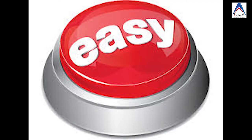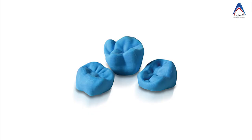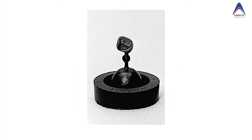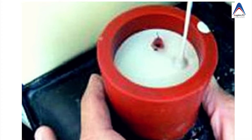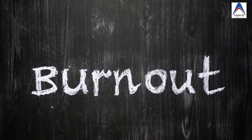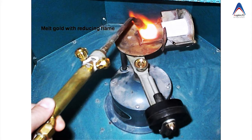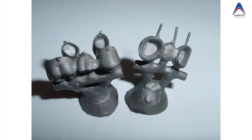Before doing that, let us be familiar with few terminologies in casting. When you want to make a cast restoration, first you have to make the wax pattern, and that wax pattern will be invested in a casting ring. In that casting ring, we'll pour the investment material. After the investment material sets, this casting ring is heated so that the wax burns out — that's why this procedure is called wax burnout.